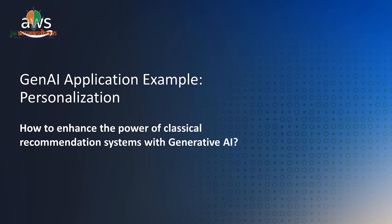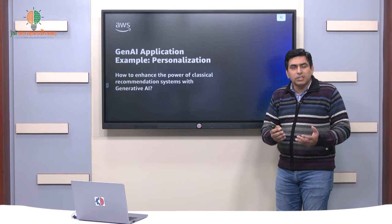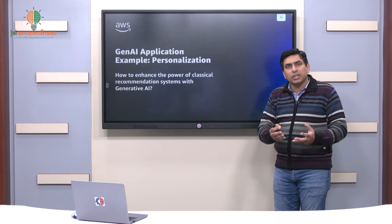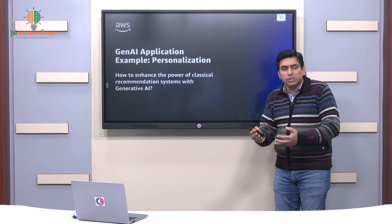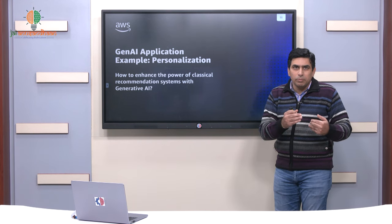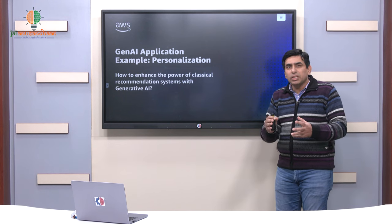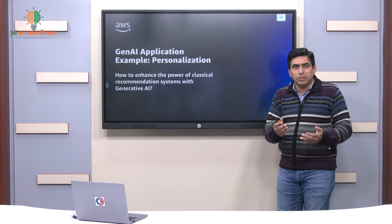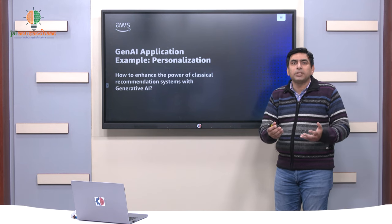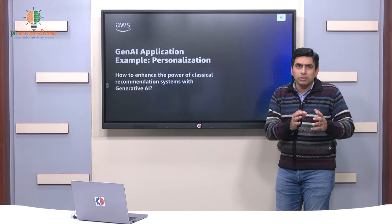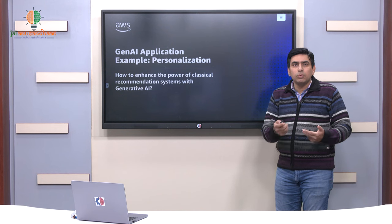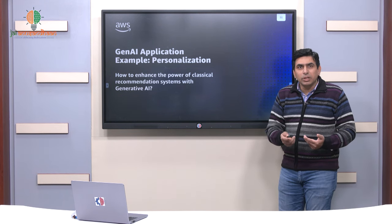We will start with one example that we have been facing in the past. When you go to retail websites and search for products, they recommend new products to you. On education websites, they recommend courses based on your past history — what you have been doing and browsing before. Even on Netflix or Prime Video, based on your viewing activity, you are recommended new video content. That personalization is a problem people have been trying to solve, but how does this new technology called Gen AI impact it — that is the idea we are exploring here.